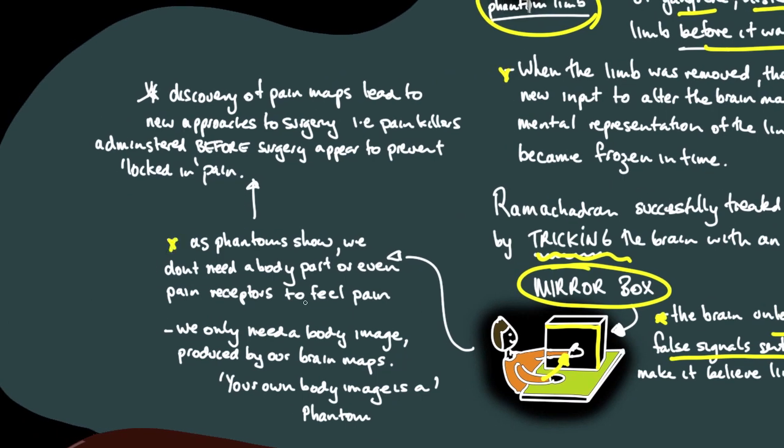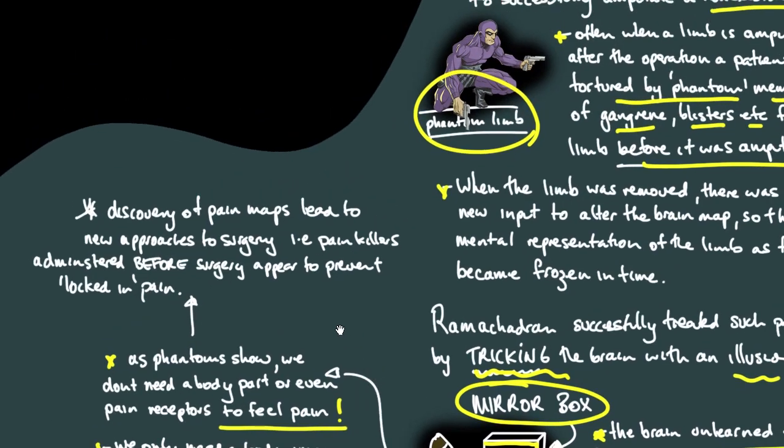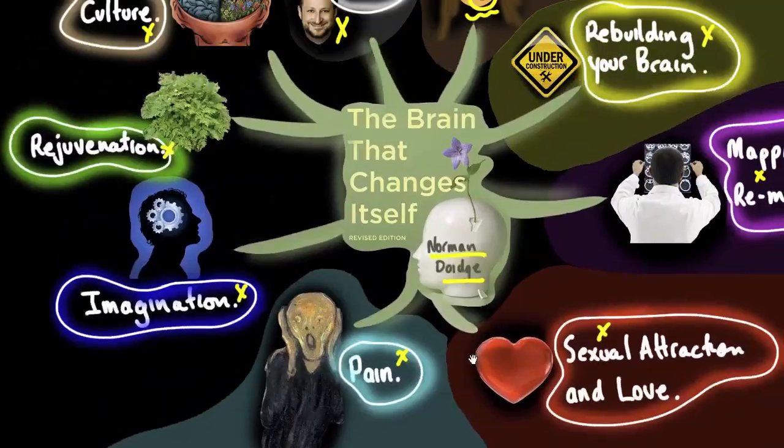As phantom limbs show, we don't need a body part or even pain receptors to feel pain. We only need a body image produced by our brain maps. Your own body image is a phantom. We talked about this in another topic - there's a representation of the body in the brain and it obviously can be inaccurate. If we lose a limb, it still feels like the limb's there. One practical point that came out of all of this is that the discovery of these pain maps has led to new approaches to surgery - painkillers are actually administered before surgery now in a lot of cases to prevent locked-in pain or phantom pain.